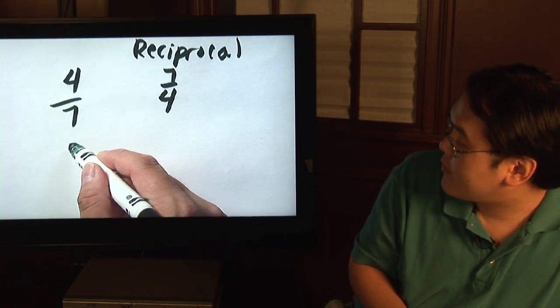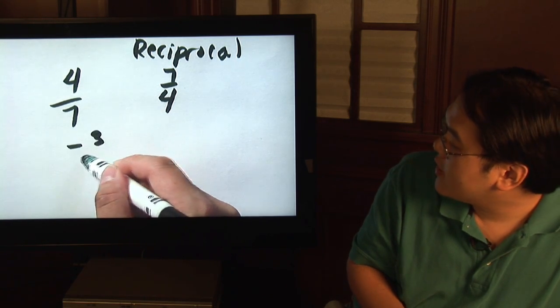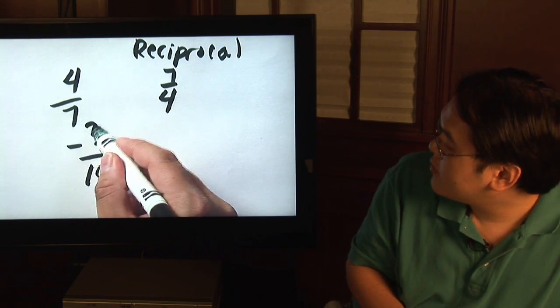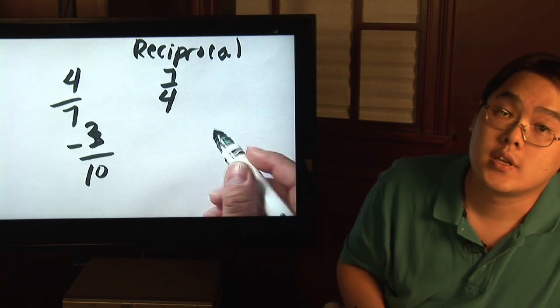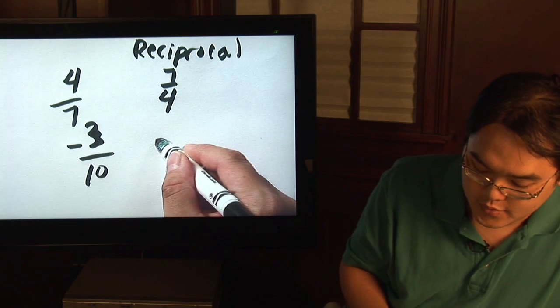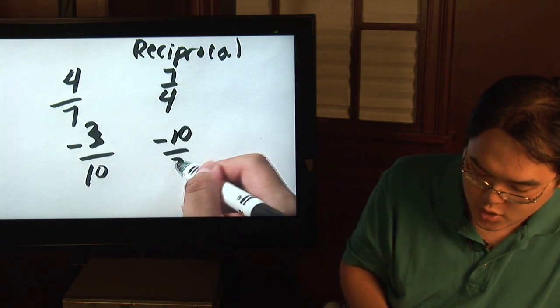What about negative fractions? Suppose you have negative three over ten. What's the reciprocal of that? Just flip the fraction and keep the sign. So you'll have negative ten over three.